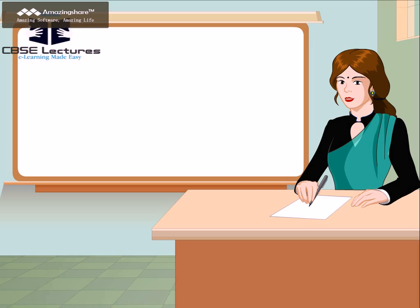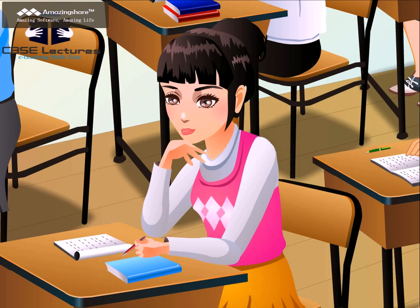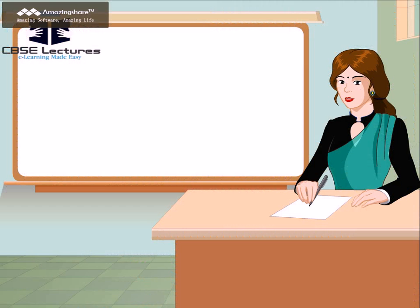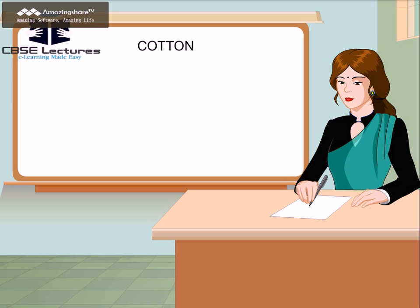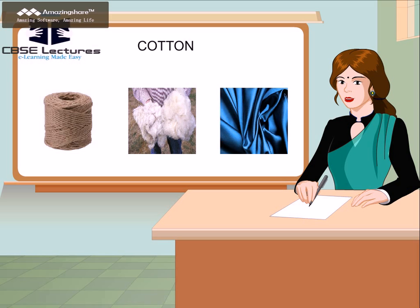Can anyone guess where do we get the fiber from? Ma'am, I know how a cotton cloth is made. It is made of cotton threads obtained from the cotton plant. Very good. Cotton is obtained from a natural source. Other examples of natural fiber are jute, wool, and silk.